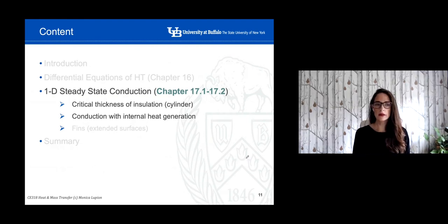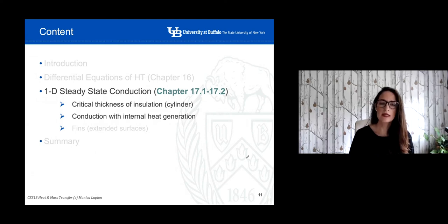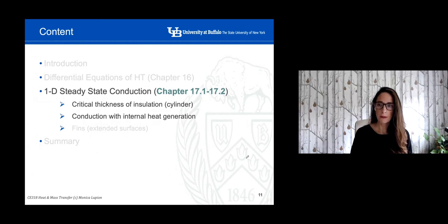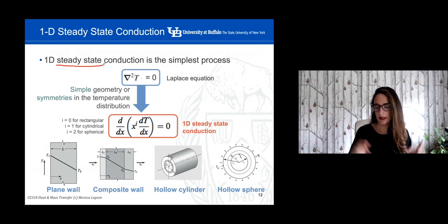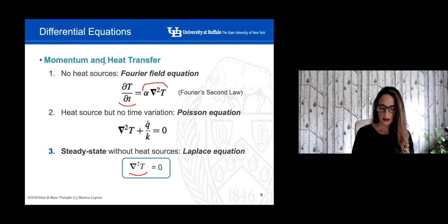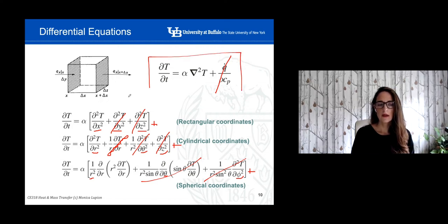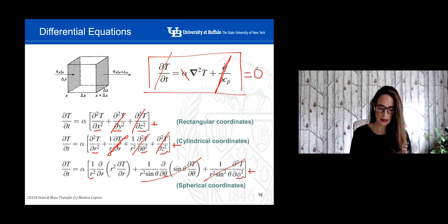Let's now look at how to apply this differential equation. Depending on the particular situation, we simplify it accordingly. We'll see two cases: the critical thickness of insulation, and how to handle internal heat generation. In general, we assume no dependence with time — that's why it's called steady state. Starting with the easiest case — no heat generation — we apply the Laplace equation. Because it's a second-order differential equation, we get two constants. We need boundary conditions to find them — for example, the temperature on each side of the wall — and then we get the temperature profile through the plane wall.